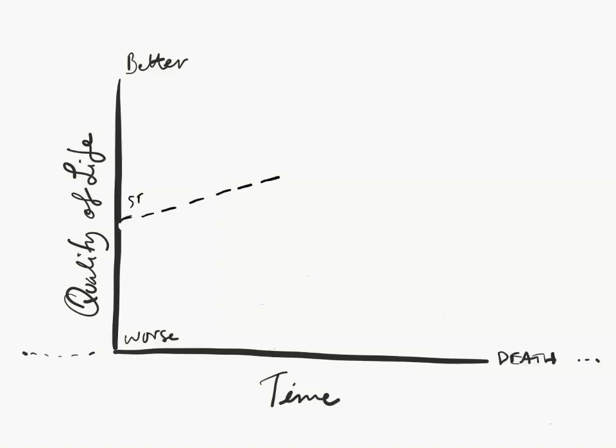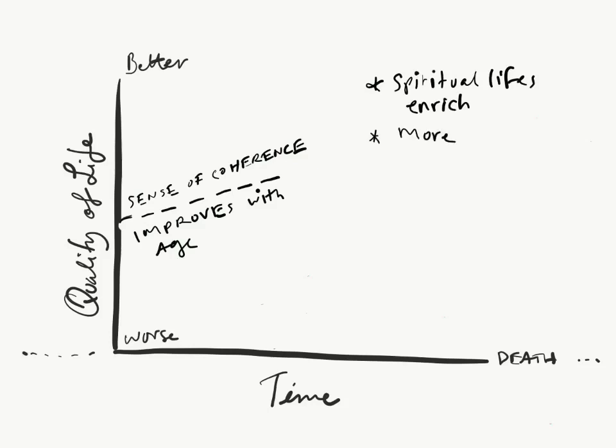Now what usually happens is that throughout people's lives, their sense of coherence improves. They get more experience, that's comprehensibility. People's lives are often enriched with greater meaning because older people typically have more developed spiritual lives. Sometimes retirement is replaced with volunteering, meaning that the sense that people are doing something meaningful with their lives can sometimes be even more profound once they retire.